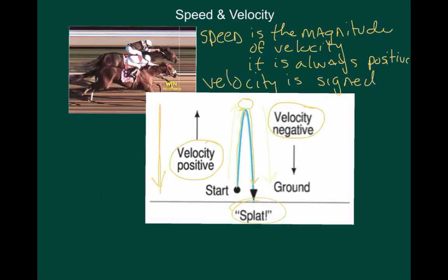Speed is the absolute value of velocity. The two numbers will be the same, but velocity will have a sign, speed is always positive.